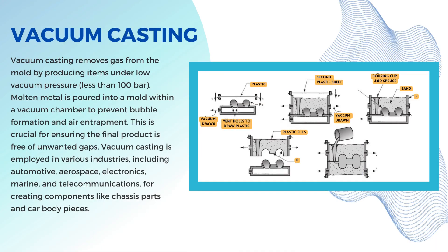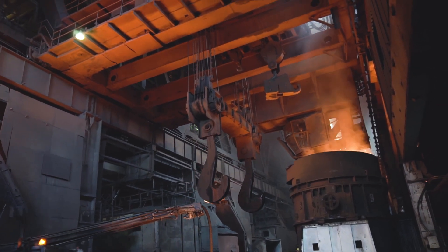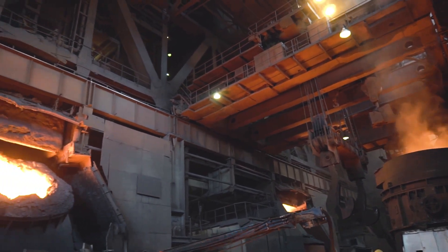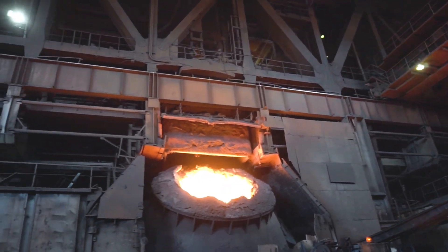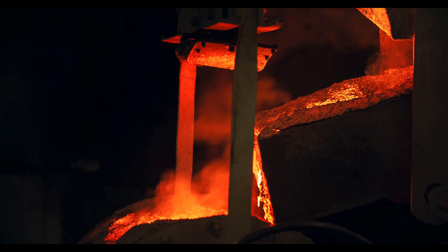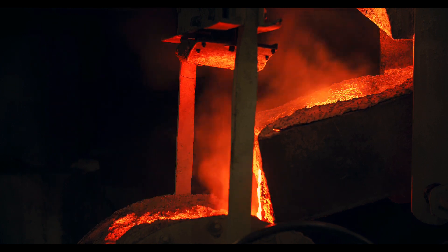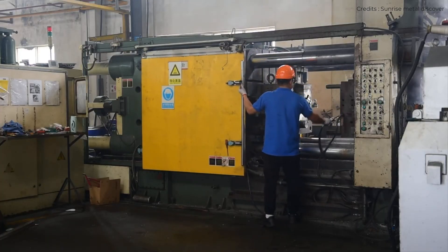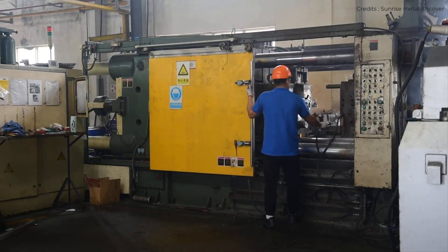The next one is vacuum casting. As the name suggests, it is a casting method where they make things under low vacuum pressure — less than 100 bar — to get rid of gas from the mold. They pour melted metal into a mold inside a vacuum chamber to prevent bubbles and air from getting trapped, which avoids unwanted gaps in the final product. This method is used in different industries like automotive, aerospace, electronics, marine, and telecommunications, to make things like chassis parts and car body pieces.